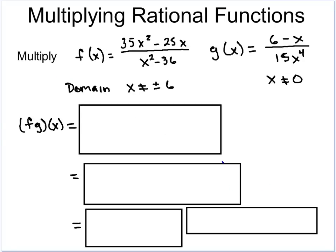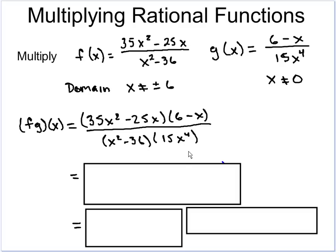Let's look at a more complicated example where we actually have to reduce fractions and cancel variables. We have f(x) equals 35x² minus 25x over x² minus 36, and g(x) is 6 minus x over 15x⁴. The domain restrictions are x cannot equal positive or negative 6, and x cannot equal 0. When we put them together and multiply, since we're going to be reducing, we want to completely factor the problem — when everything is in factors, it allows us to simplify much more easily.